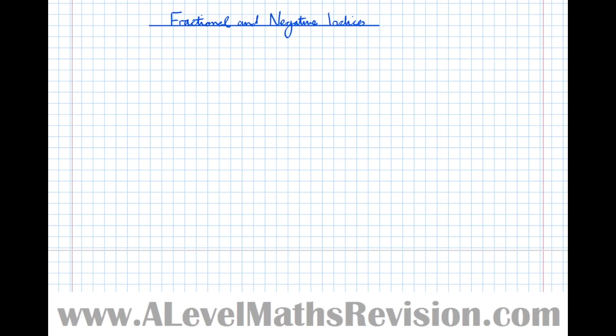Now we're going to look at fractional and negative indices. These are one of the most common places for students to go wrong, so if you get this topic nailed before you get to sixth form, you'll be at a massive advantage. We'll start with a numerical example: 27 to the power of two-thirds. I would always use the bottom number first — the bottom number is the root we have to take, i.e. the cube root. The top of the fraction indicates the power. So the bottom indicates the root; the top indicates the power.